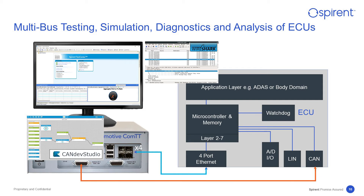Ethernet traffic can be generated with SPIRINT Test Center and combined with CAN bus traffic generated with CAN Dev Studio. At the same time, the received data traffic can be observed using the same tools respectively via other parts of the COMTT device.